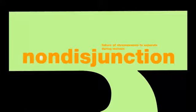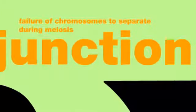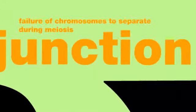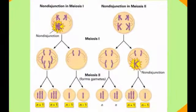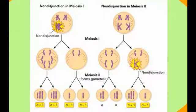The first major way that something can go wrong with your chromosomes is called non-disjunction. Non-disjunction occurs when your chromosomes don't separate properly during meiosis. Here's a diagram of non-disjunction occurring — it can occur during meiosis 1 or meiosis 2.